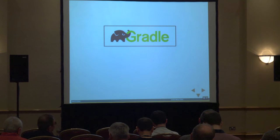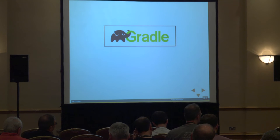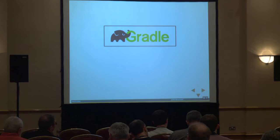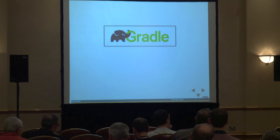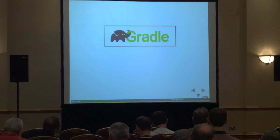Maven brought two very important things to building software. The first was dependency management — you can store metadata about dependencies in a repository, and it will pull that metadata, work out everything that's transitive, and pull all those dependencies down. The second was the concept of convention in building projects: your source code goes under 'src/main', your test code under 'src/test'. We also call it convention over configuration. Gradle inherited a lot of that, but Gradle didn't stop there because it wasn't just a better Maven — the two aren't really comparable.